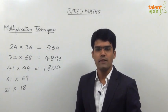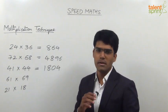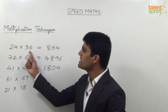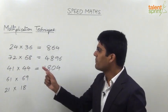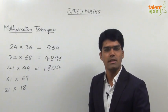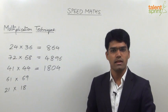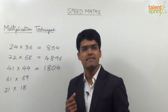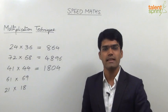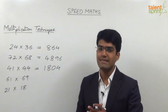One point worth mentioning: how to decide whether (a + b)(a - b) is applicable. The formula is applicable if and only if the difference between the two numbers is even. For example, 24 and 36 have a difference of 12, which is even, so (a + b)(a - b) applies. Similarly, 72 and 68 have a difference of 4, so it is possible. But for 41 and 44, the difference is 3 — odd — so applying the formula gives decimals and becomes a complicated calculation. Never apply (a + b)(a - b) when the difference is odd.